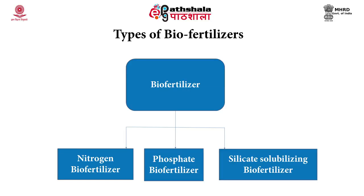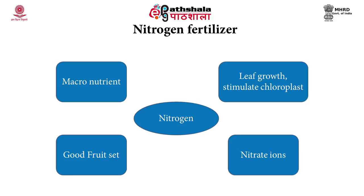Biofertilizers are of three types: nitrogen biofertilizers, phosphate biofertilizers, and silicate solubilizing biofertilizers. Nitrogen is a macronutrient required by the plant for its leaf growth. It helps in stimulation of chloroplast production and enhances fruit set. Nitrogen is used by the plant in the form of nitrate ions.